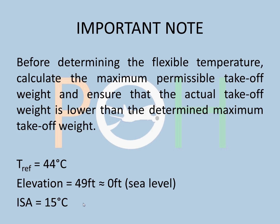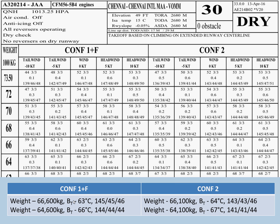Pick up the data from the charts as well. TREF is 44°C, that's from the bottom of the chart. Elevation at Chennai is 49 feet; for practical purposes we are considering it to be 0, sea level. ISA is 15°C at sea level. 5 knots of headwind was given and the weight was 65 tons.